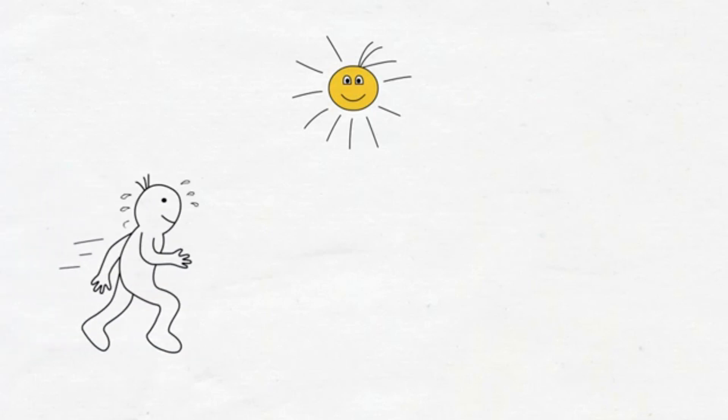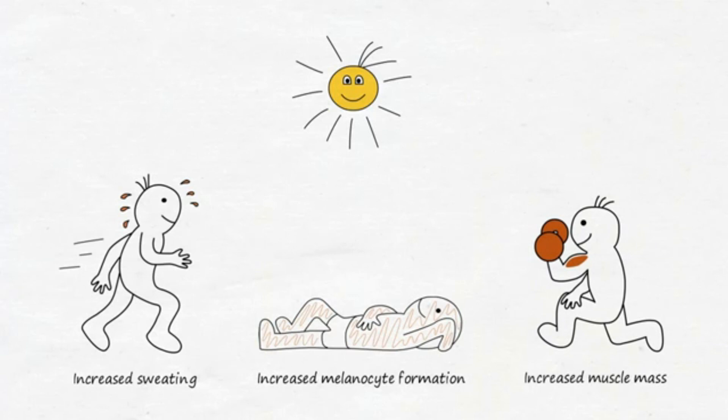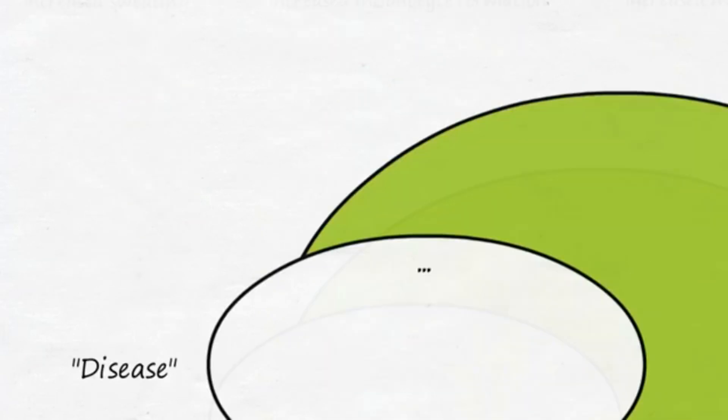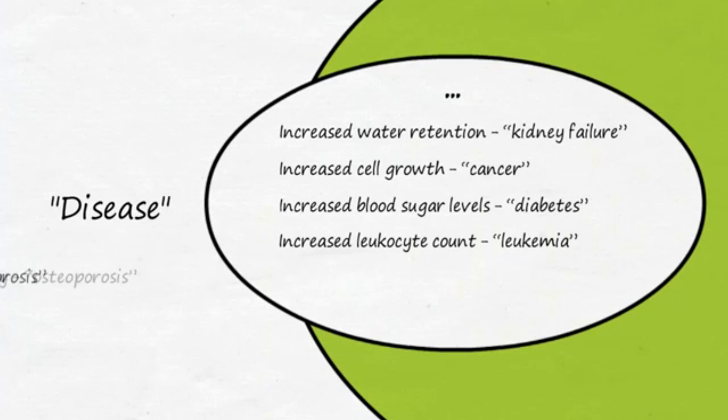For example, we sweat and our pulse rate climbs when we jog, or we tan upon prolonged exposure to the sun, or our muscles grow if we regularly push them to their limit. However, other changes at the cellular or functional level are referred to as disease, as so far, nobody has been able to make any sense of them.